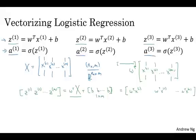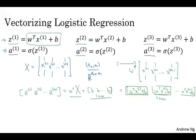And then when you add this second term, b, b, b, b, b, b, and so on, you end up adding b to each element. So you end up with another 1 by m vector, where that's the first element, that's the second element, and so on, and that's the mth element. And if you refer to the definitions above, this first element is exactly the definition of z^(1), the second element is exactly the definition of z^(2), and so on.